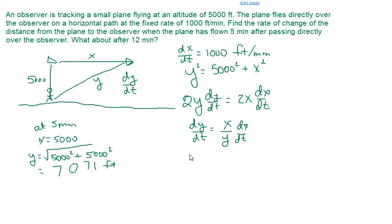So to get our rate, dy/dt is going to equal x distance, which is 5,000 divided by our y distance, 7,071. And that's going to be times 1,000 feet. And that comes out to be approximately 707 feet per minute.